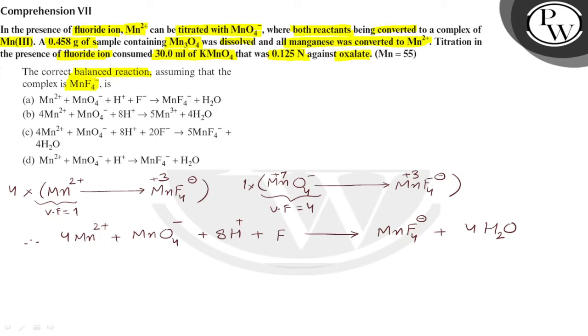Now which option is correct? Manganese is counted. Here 1 and 4 total 5. Place 5 here. So which option is correct here? Fluoride ions can also be counted. Fluoride ions must be 20 F minus.